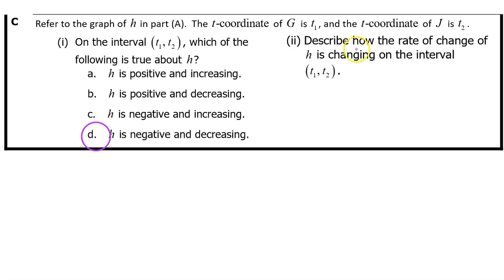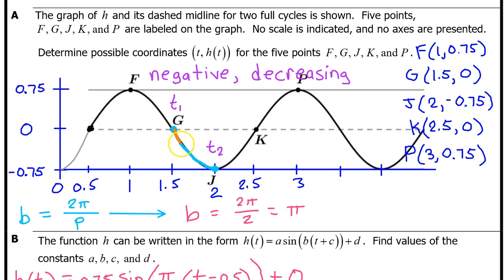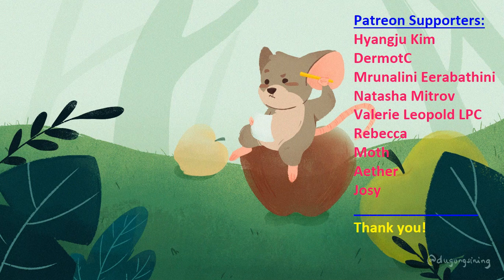Part C, part two: Describe how the rate of change of h is changing on the interval from t1 to t2. If h of t is concave up, the rate of change of h is increasing; if concave down, the rate of change is decreasing. On the interval from t1 to t2, h of t is concave up, so the rate of change of h is increasing. You can get full credit by answering with a single word: just say increasing. Don't forget to like and subscribe — click the upper link for the whole unit playlist or the lower link for the next video.